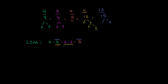So this is our least common multiple, and we just take this product. 3 times 3 is 9, times 2 is 18, times 2 is 36, times 5. Let's work that out: 6 times 5 is 30, 3 times 5 is 15, plus 3 is 180. So our least common multiple is 180.